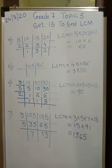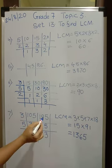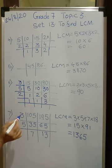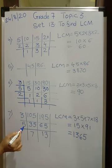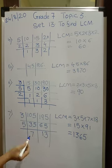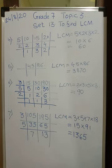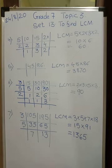Let's go to the 7th problem: 105 and 195. Both are divisible by 3, being the smallest prime, so I choose 3 first, giving 35 and 65. Both are then divisible by 5, giving 7 and 13. Now 7 and 13 are both prime numbers, so I can't go further. The LCM is 3 × 5 × 7 × 13 = 1365. I hope the concept is clear.